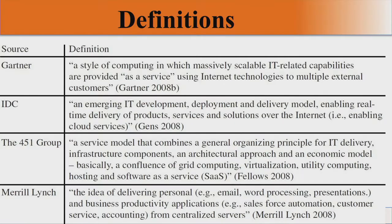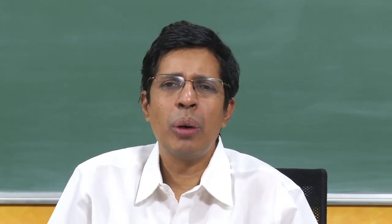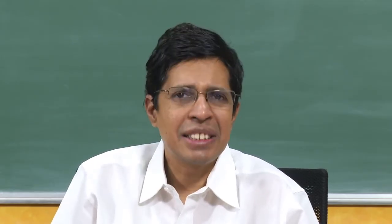These are all definitions of a cloud. Many people have come out with definitions of cloud. For example, Gartner says: a style of computing in which massively scalable IT-related capabilities are provided as a service using internet technologies to multiple external customers. There are many other definitions which are almost equivalent to this, but with some different nuances. Basically, a cloud is one infrastructure which can cater to the need of many people and do different varieties of services.